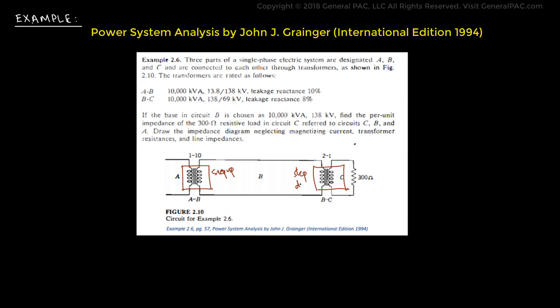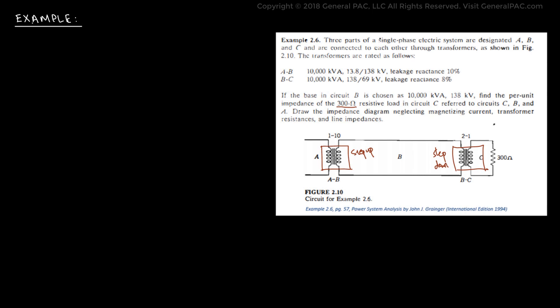The A-to-B transformer has a leakage reactance of 10%, and the B-to-C transformer has a leakage reactance of 8%. The question states: if the base in circuit B is chosen as 10,000 kVA, 138 kV, find the per unit impedance of the 300 ohm resistive load in circuit C, referred to circuits C, B, and A. Draw the impedance diagram neglecting magnetizing current, transformer resistance, and line impedance. Now let's solve this question, keeping in mind that this is a single phase system, so base impedance calculations differ from a three phase system.